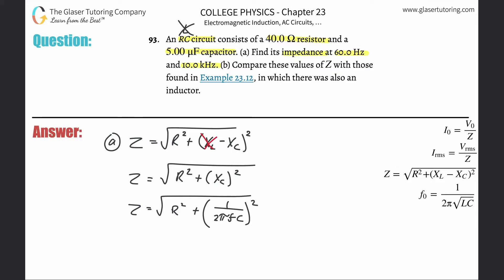We have enough information to plug in. We're going to do two calculations for two frequencies. This is 40 squared plus, in parentheses, one over two pi times the frequency of 60 hertz, multiplied by the 5 microfarad capacitor, which is 5 times 10 to the minus sixth farads. Square that whole term under the root.